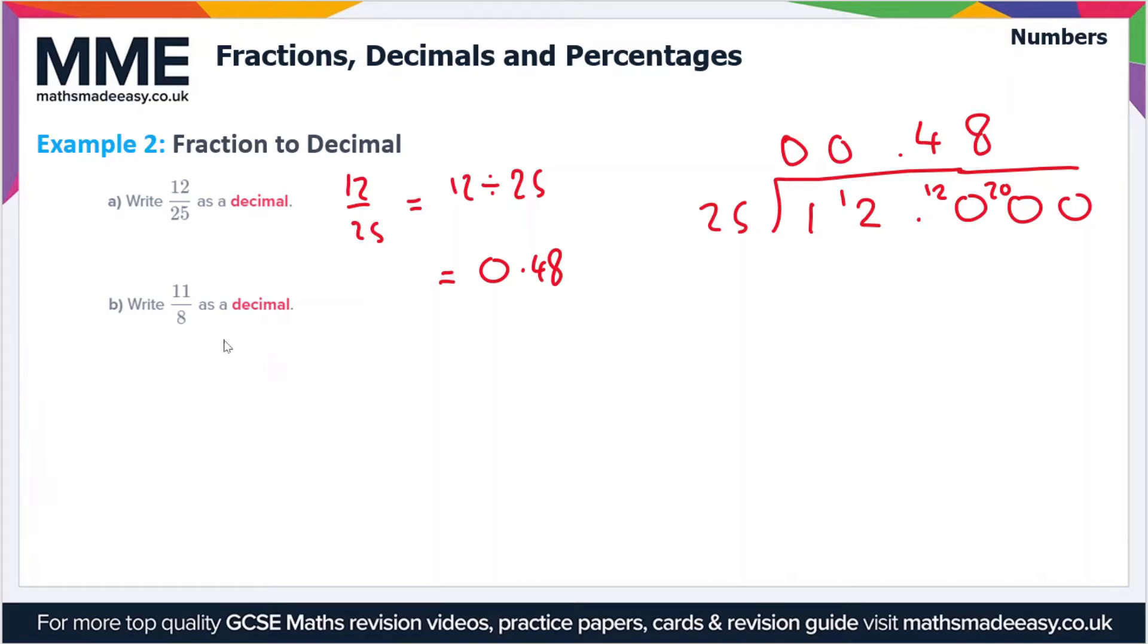So moving on to part b then. We have to write 11 over 8 as a decimal. So 11 over 8 is equal to 11 divided by 8. Again we're going to use the bus stop method here. So we've got 8 into 11. Let's put some zeros in.